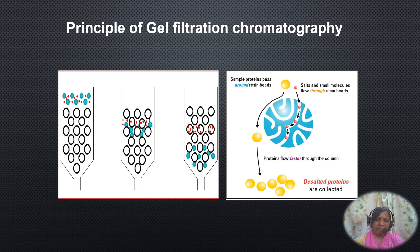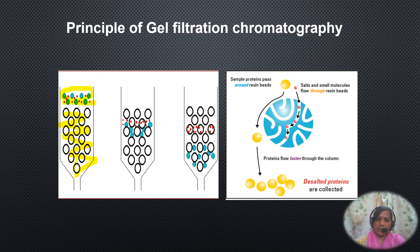Here is another picture to understand it better. The column contains the matrix or porous bead stationary phase and a sample with different sized particles is loaded. As particles move along with the mobile phase, small molecules enter the beads while large molecules pass through the mobile phase and elute first, whereas small molecules elute later.